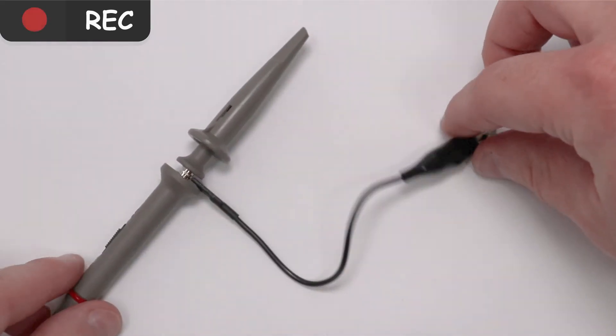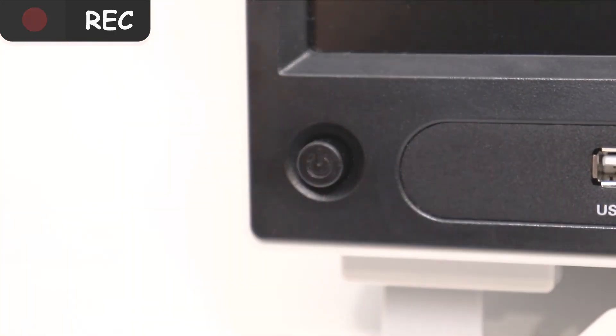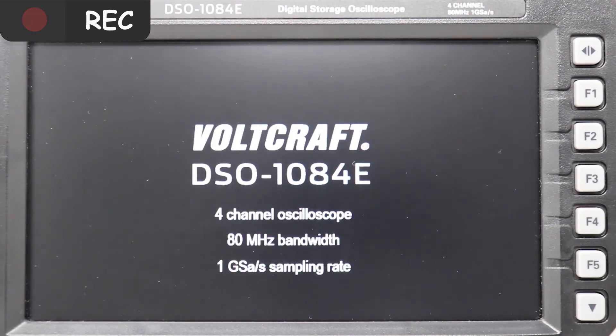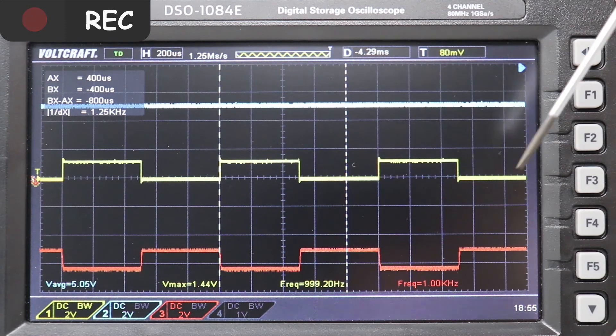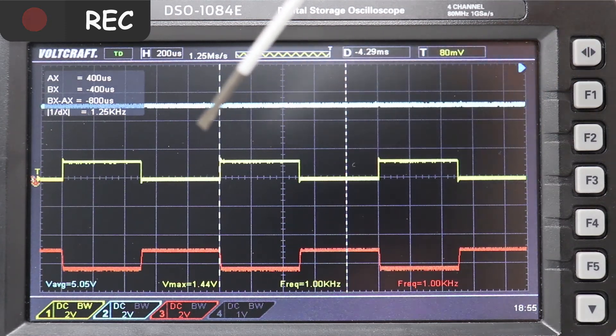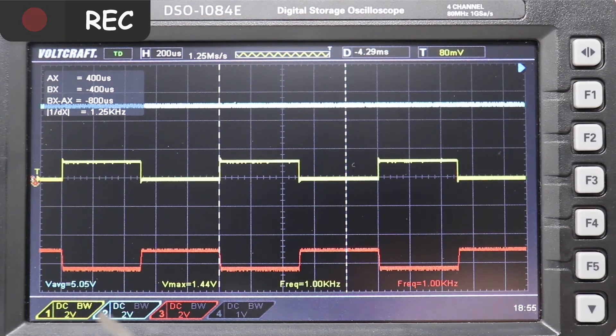Let's have a look at the oscilloscope to see if the adder really sums up the input signals like in theory. Our square wave oscillates on channel 1. Here we have the 5 volts from input 2, and on channel 3, the output is measured.